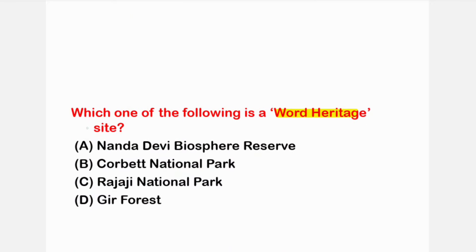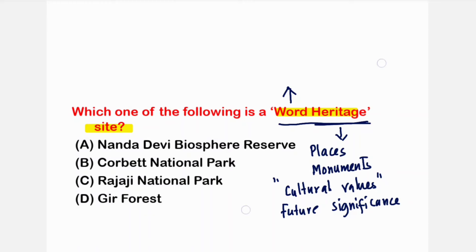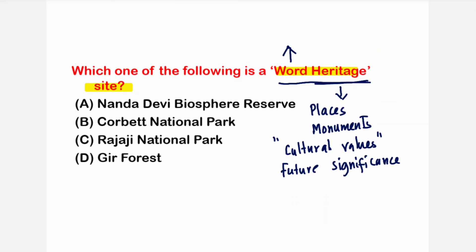The next question: which of the following is a world heritage site? World heritage sites are places — including buildings or monuments — that have cultural values and future significance, so they are preserved. Among the options, Nanda Devi Biosphere Reserve is both a world heritage biosphere reserve and a world heritage site.